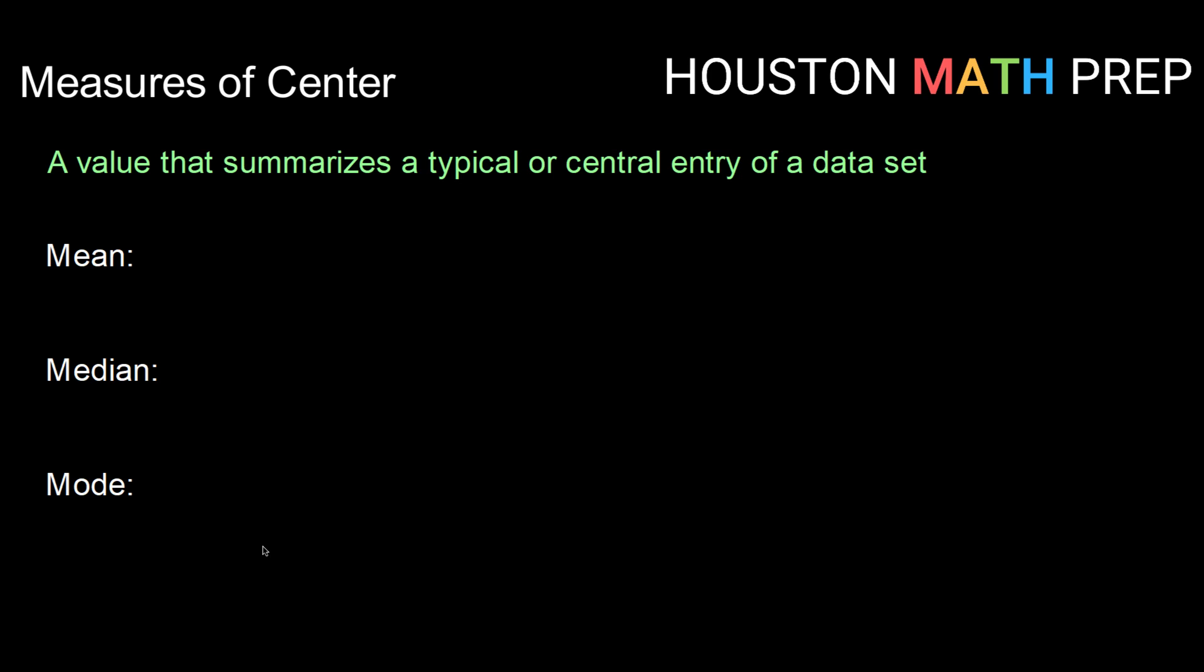So we have three main measures of center: the mean, the median, and the mode. So let's check out each one of those.